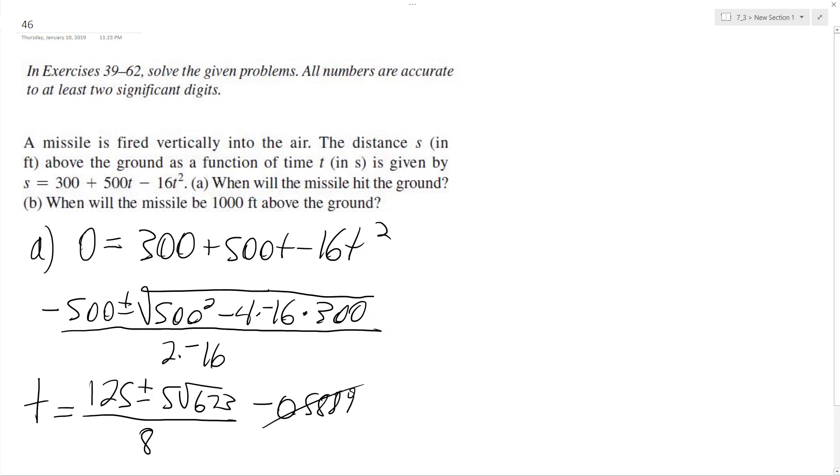The reason it's negative is because we have a starting point of 300 feet, otherwise it would be zero. But it's actually equal to 31.84 seconds, rounding to two decimal places.